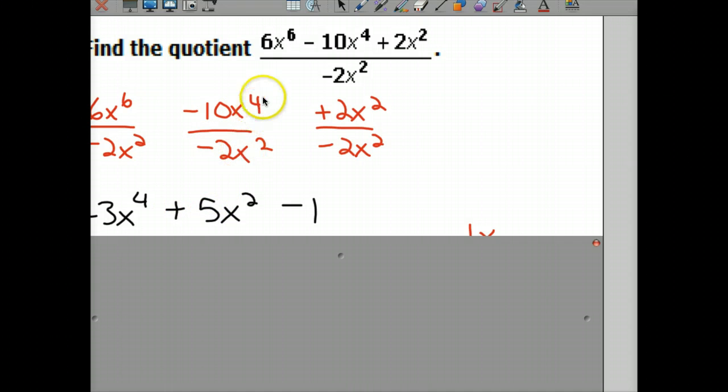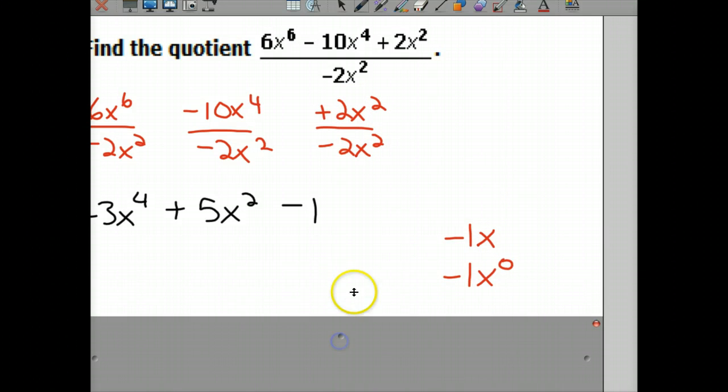Letter divided by letter subtract, 4 minus 2 is 2, to get 5x². Positive 2 divided by negative 2 is negative 1. Do it in your calculator if you have to. Now here's the biggest mistake kids make - they say x² over x² is x, and that is incorrect. x² over x² is actually x to the 0, which means it is not there.